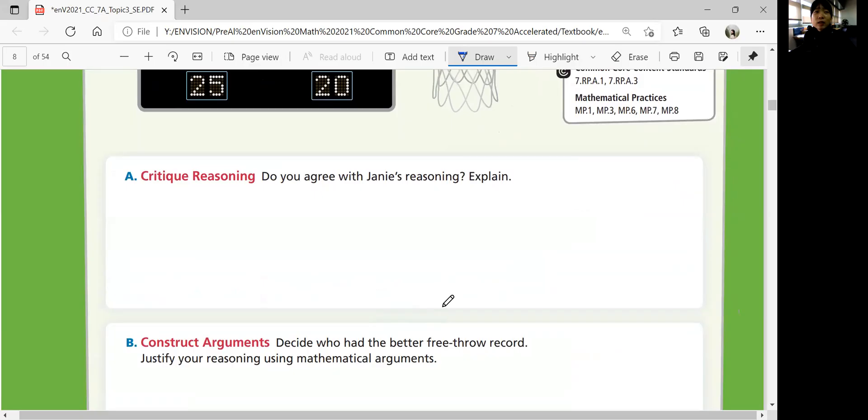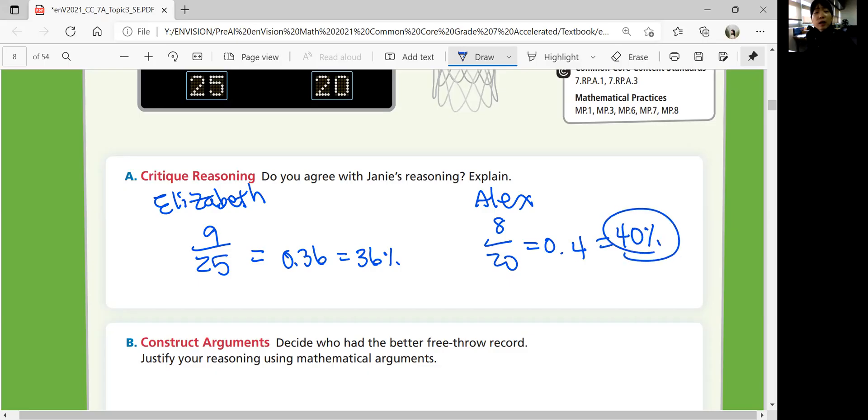Do you agree with Janie's reasoning? You can say for Elizabeth, she made 9 out of 25 throws, so in percentage that's 0.36, which is 36% of what she threw. What about Alex? She made 8 out of 20 throws, so percentage-wise it's 0.4, that's 40%. So 40 is bigger than 36, so you can say Alex has more chance. He got in more proportionally.